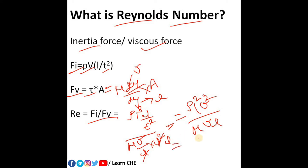So here you will see that the final formula will become rho L V by mu. This is the formula of Reynolds number which is used to categorize or to determine the types of flow, whether it is laminar, transition, and turbulent.